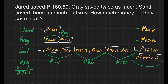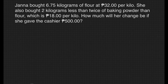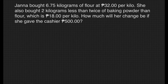That is the total amount saved by the three boys. Another example: Janna bought six and seventy-five hundredths kilograms of flour at 32 pesos per kilo. She also bought two kilograms less than twice the amount of baking soda than flour, at 18 pesos per kilo. How much will her change be if she gave the cashier 500 pesos? We can use the block model approach to understand and visualize this problem.